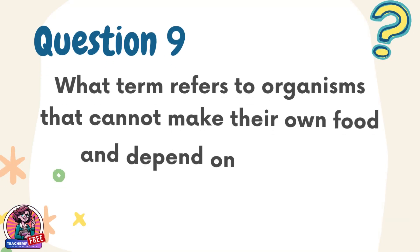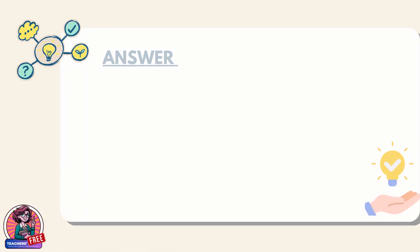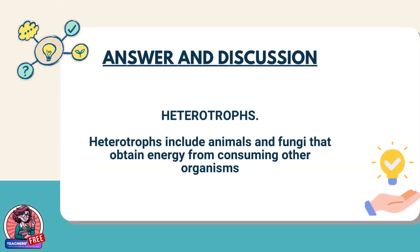Question 9. What term refers to organisms that cannot make their own food and depend on others for energy? Answer: Heterotrophs. Heterotrophs include animals and fungi that obtain energy from consuming other organisms.